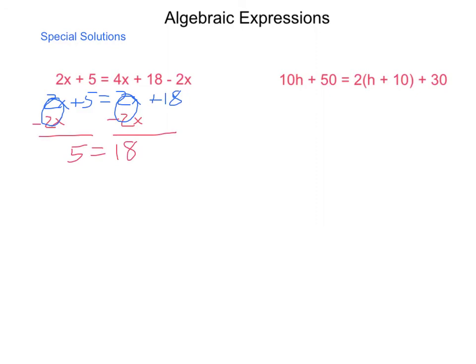When you come up with a solution that has no variables involved and is an untrue equation, 5 is not equal to 18, there is no solution. Graphically, what this would look like is that you have a set of parallel lines with different starting values. So, they will never cross and never intersect one another. So, we simply state no solution.